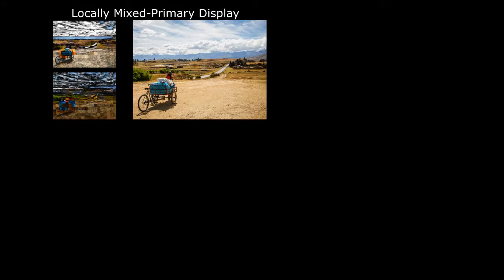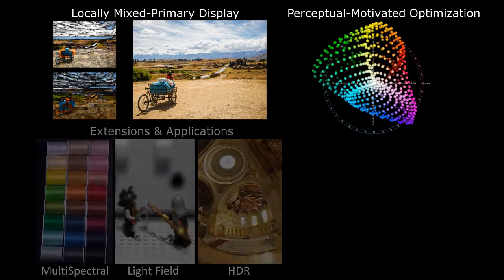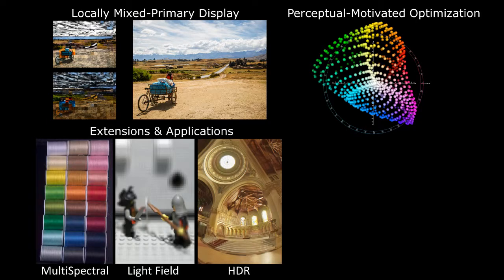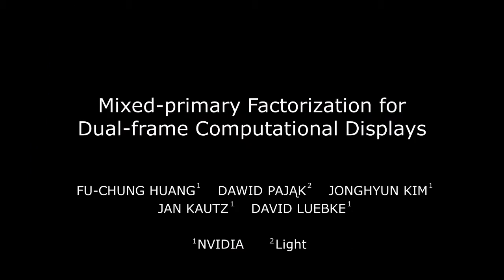To conclude, we propose a content-adaptive locally mixed primary display that optimizes colors for two-frame displays. Our mathematical framework considers both practical hardware and perceptual effects. It is flexible to include many extensions, and is implemented in GPU. Integrating both optics computations and human perceptions, we hope to advance the computational displays.